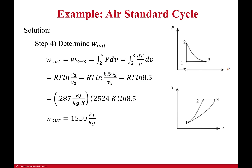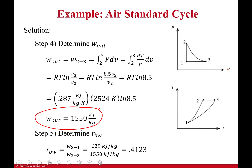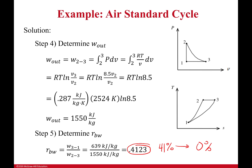With both work in and work out, the ratio of back work is simply the ratio of those two. This tells me I'm using 41% of my energy just to run the cycle. We want this number to go down — 0% would be amazing, though not possible. The lower it is, the better the cycle. As it approaches 1 (100%), you're wasting all the energy just running the cycle.